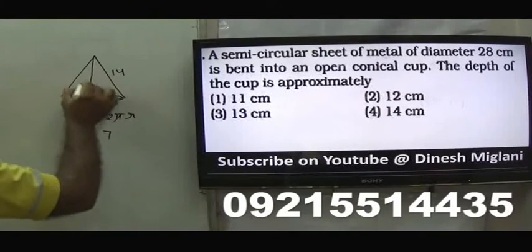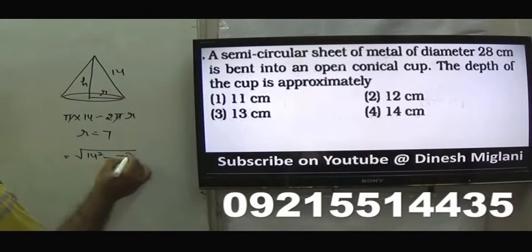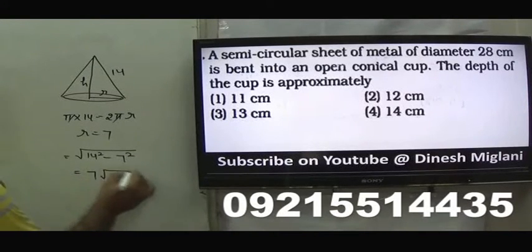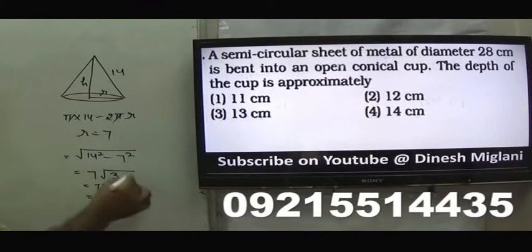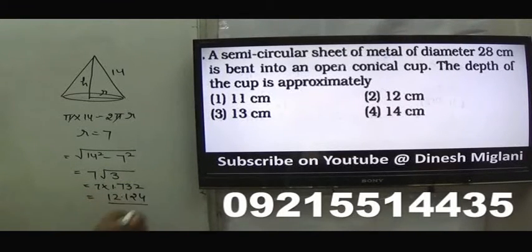To find the depth (height), apply Pythagoras: h = √(14²−7²) = √(196−49) = √(7²×3) = 7√3. Calculating 7 × 1.732 ≈ 12.12, so the approximate depth is 12 centimetres. The answer is the second option.